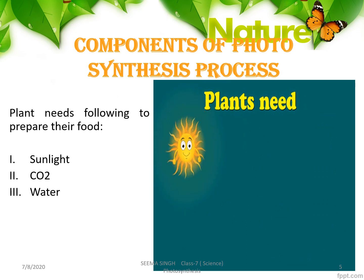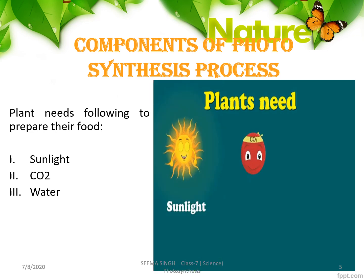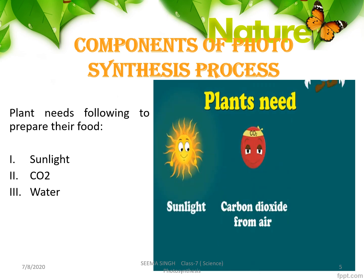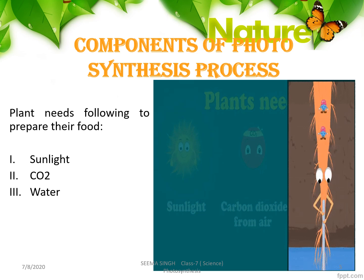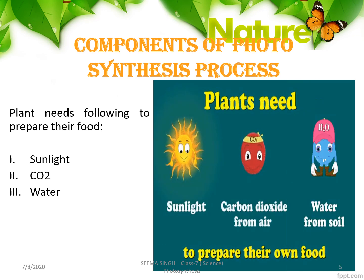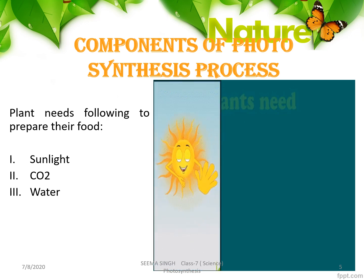Sunlight is available from the sun. Carbon dioxide — the plant takes carbon dioxide from the air. Water is obtained by the plant from the soil through their roots; whatever water is present in the soil, the plant gets it through its roots. So these are the major components for the process of photosynthesis to occur.